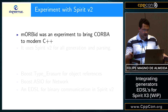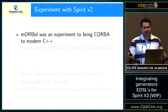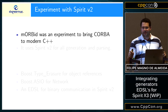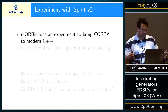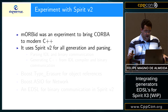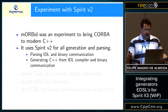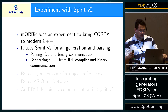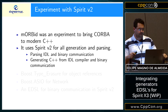Morbid is the name of the library for CORBA, which we tried to make as an experiment using CORBA with modern C++. CORBA was standardized in C++ before the C++ standard and it has a very poor binding. So we try to bring that to modern C++. We use Spirit V2 for all generation and parsing of CORBA — for parsing IDL, the IDL language, for binary communication, as well as generating C++ from IDL and for generation of binary communication between CORBA libraries.